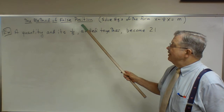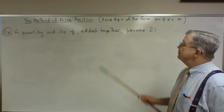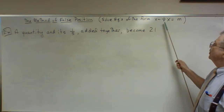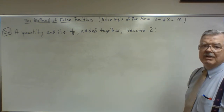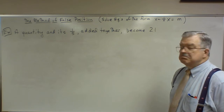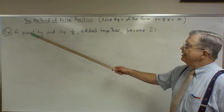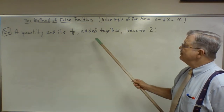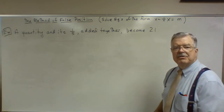The method of false position, if we analyze it, is used to solve equations of the form x plus 1 over n times x equals m. Let's do an example from the book: a quantity and its one-fifth added together become 21.